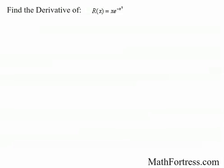Find the derivative of r of x equals x times e raised to the negative x squared. Here, we are dealing with a product of two functions: x, and e raised to the negative x squared. So we need to apply the product rule, which means we need to find the derivatives of each function.